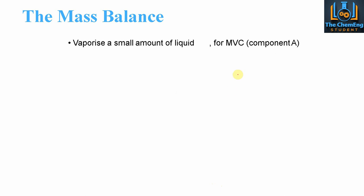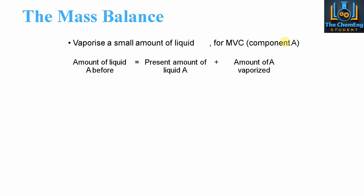To vaporize a small amount of liquid — the more volatile component, which we'll call component A — we take the generalized balance: the amount of liquid A before the system must equal the present amount of liquid A within the system plus the amount of A that is vaporized. What comes in must equal the amount in the vapor phase plus the amount in the liquid phase, and these values must add up to 1. Substituting in nomenclature, the amount of liquid A beforehand is WX, which equals the present amount of liquid A — X minus a proportion — as we're doing a differential balance.